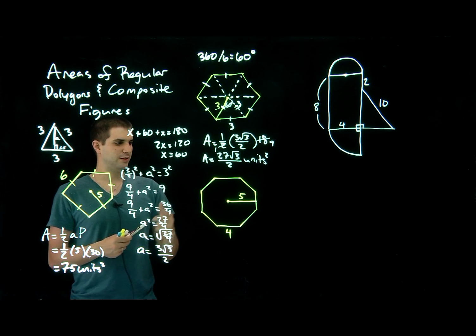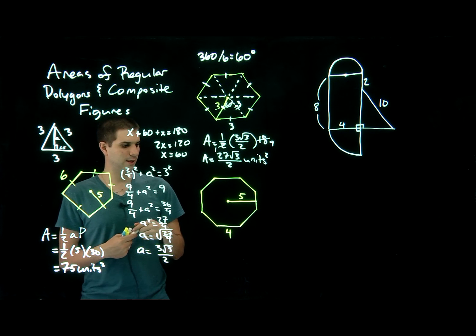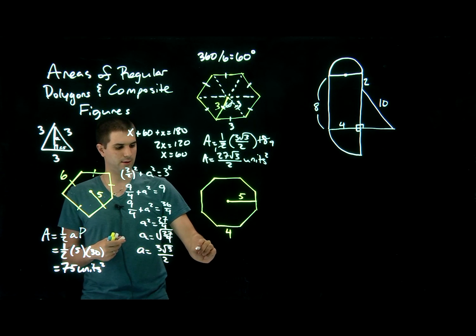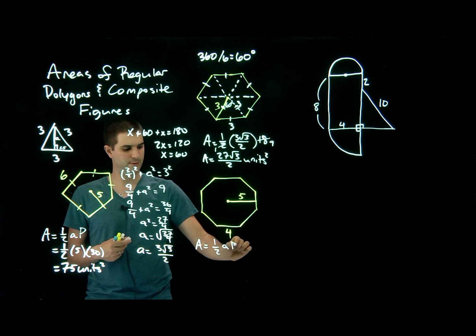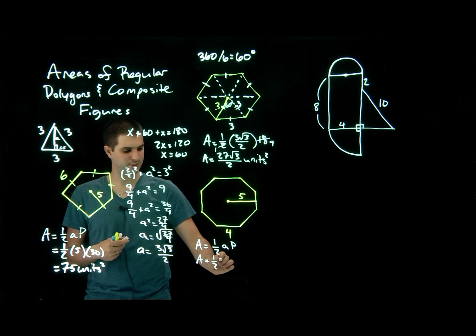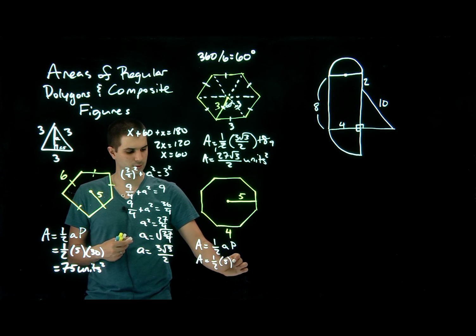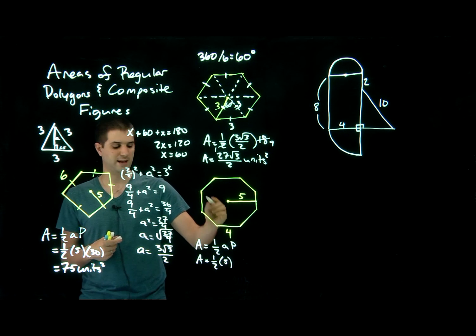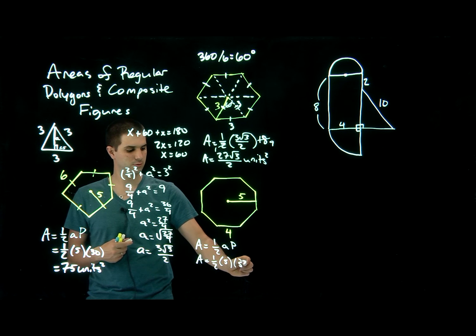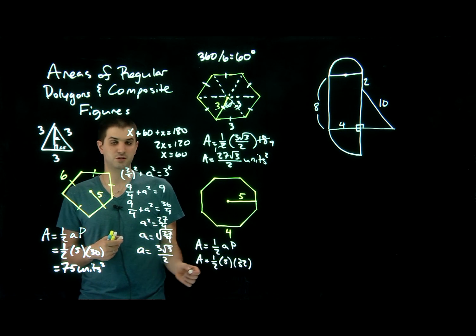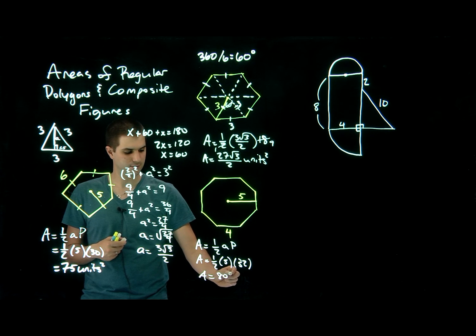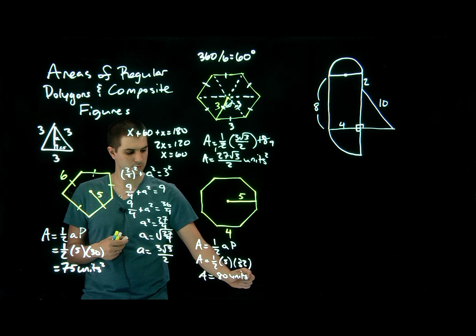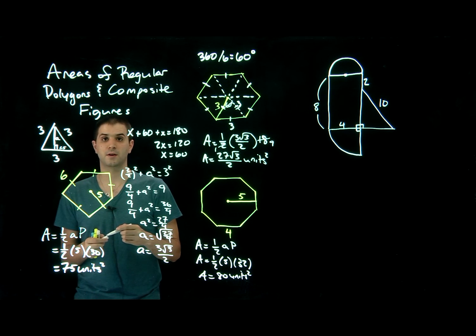Moving on to the octagon: area equals one half AP. The apothem is given as 5, and the perimeter is 4 times 8, which is 32. Half of 32 is 16, and 16 times 5 is 80 units squared.